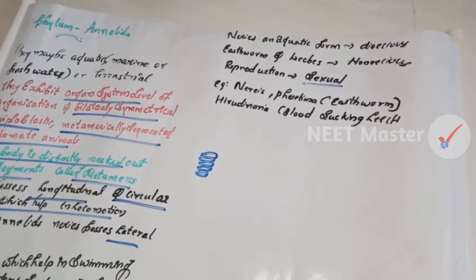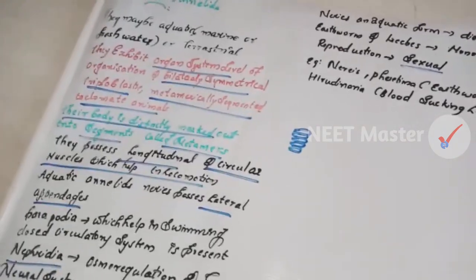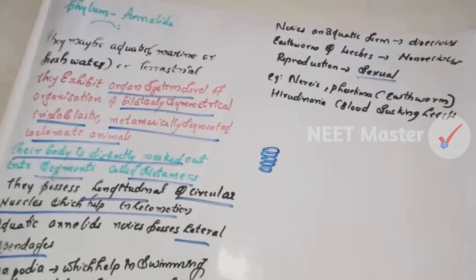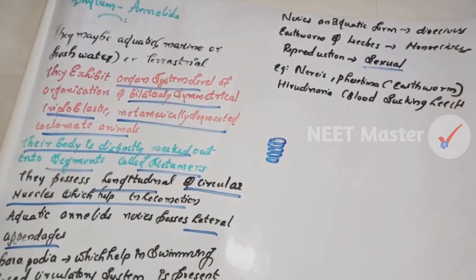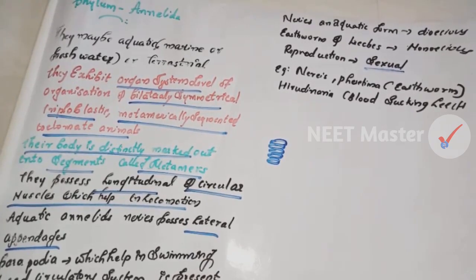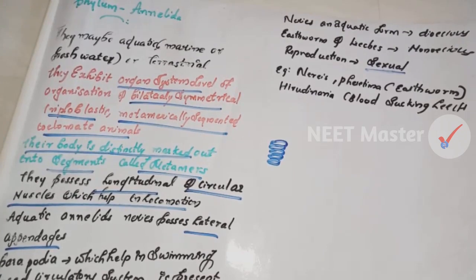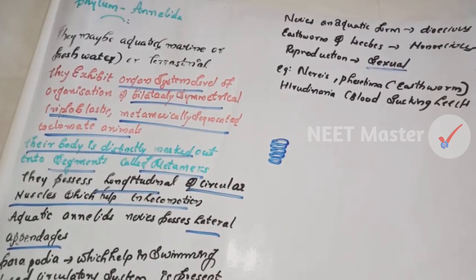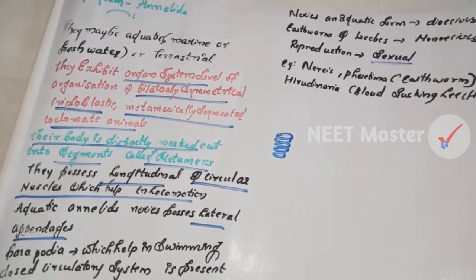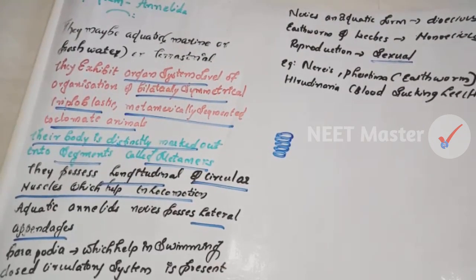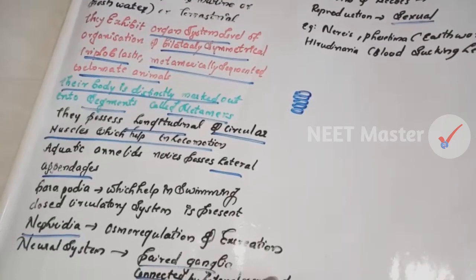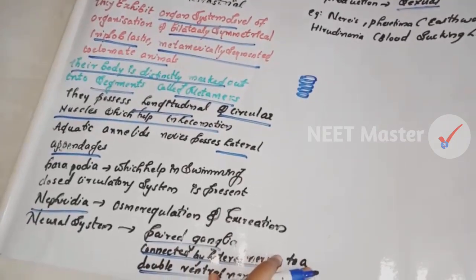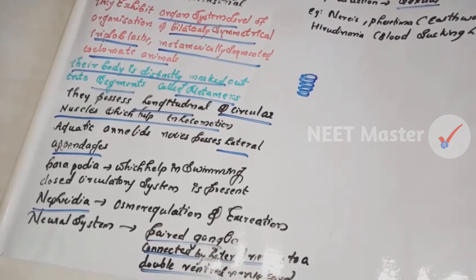Reproduction is asexual in some, like Nereis. Hirudinaria (leech) is a very important example — it is a bloodsucking annelid. Annelida means 'little rings' — the body contains ring-like segments. They can be aquatic, marine, freshwater, or terrestrial. They have longitudinal and circular muscles for locomotion, parapodia as lateral appendages, a closed circulatory system, and nephridia for osmoregulation and excretion.